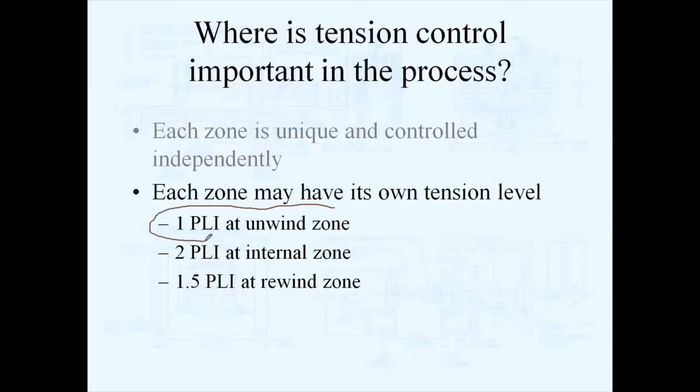You can literally unwind at one PLI tension, and then let's say you may want to process at two PLI tension, and then rewind at 1.5 tension. Since each zone is separate, you can literally vary the tension within each zone independently of each other.